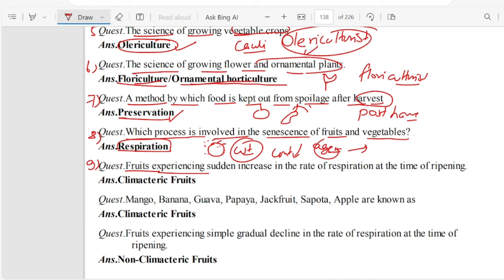Question 9. Fruits experiencing a sudden increase in the rate of respiration at the time of ripening are Climacteric Fruits. Mango, banana, guava, papaya, jackfruit, sapota, apple are known as Climacteric Fruits.